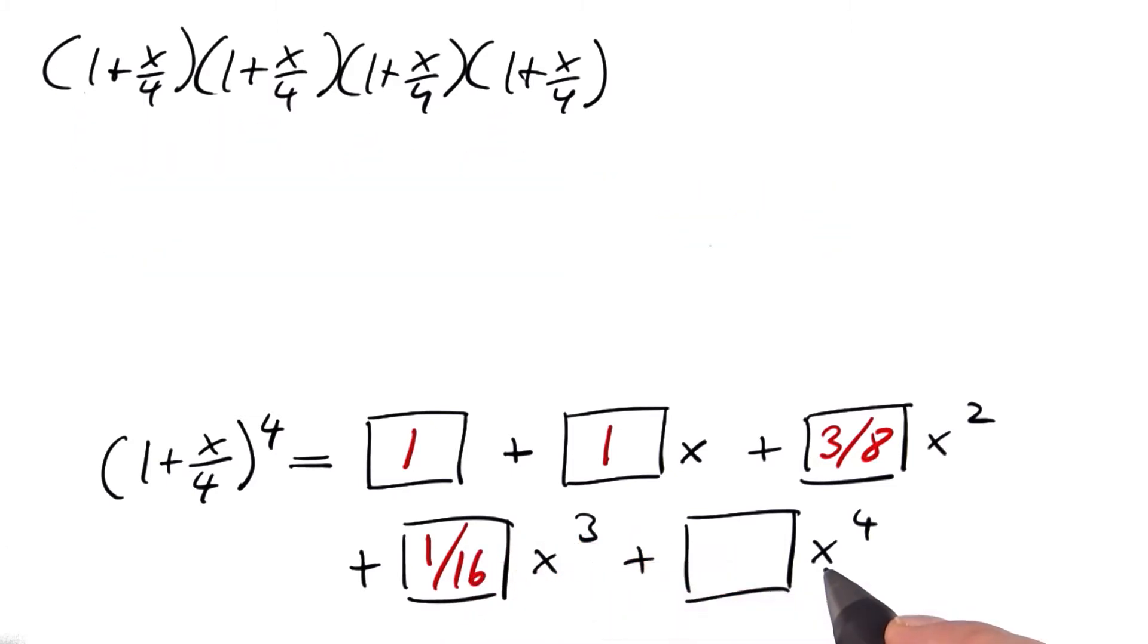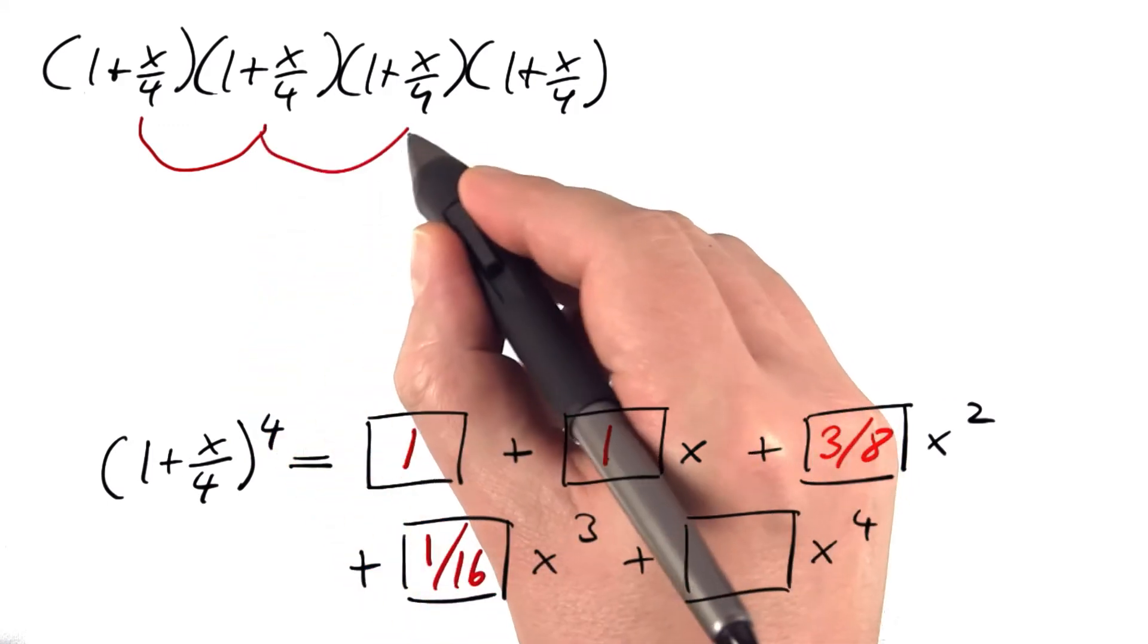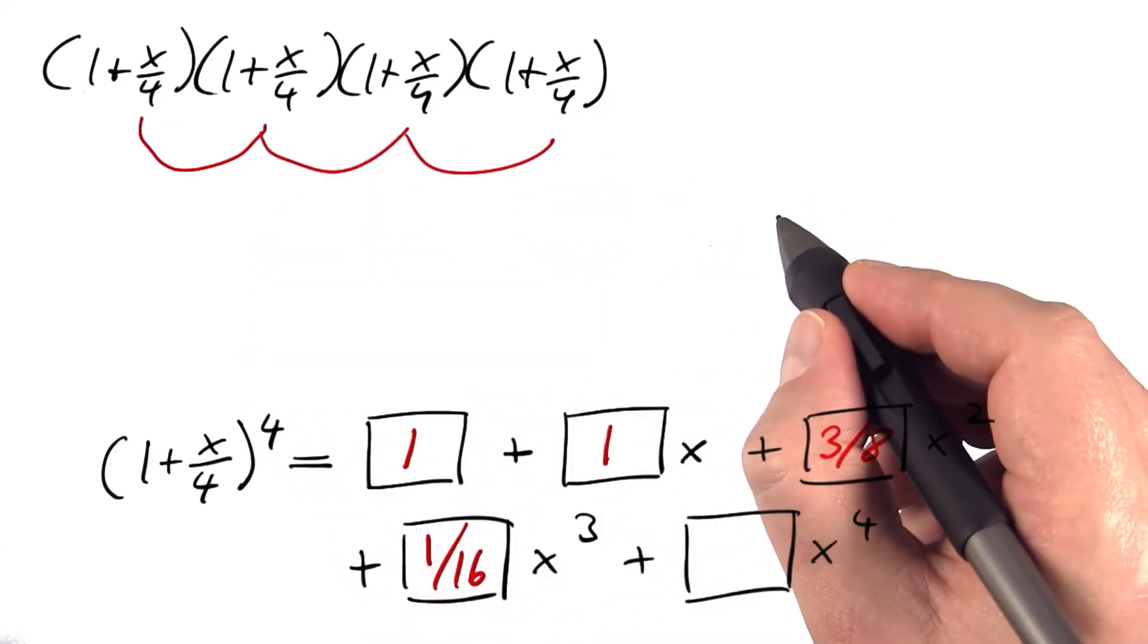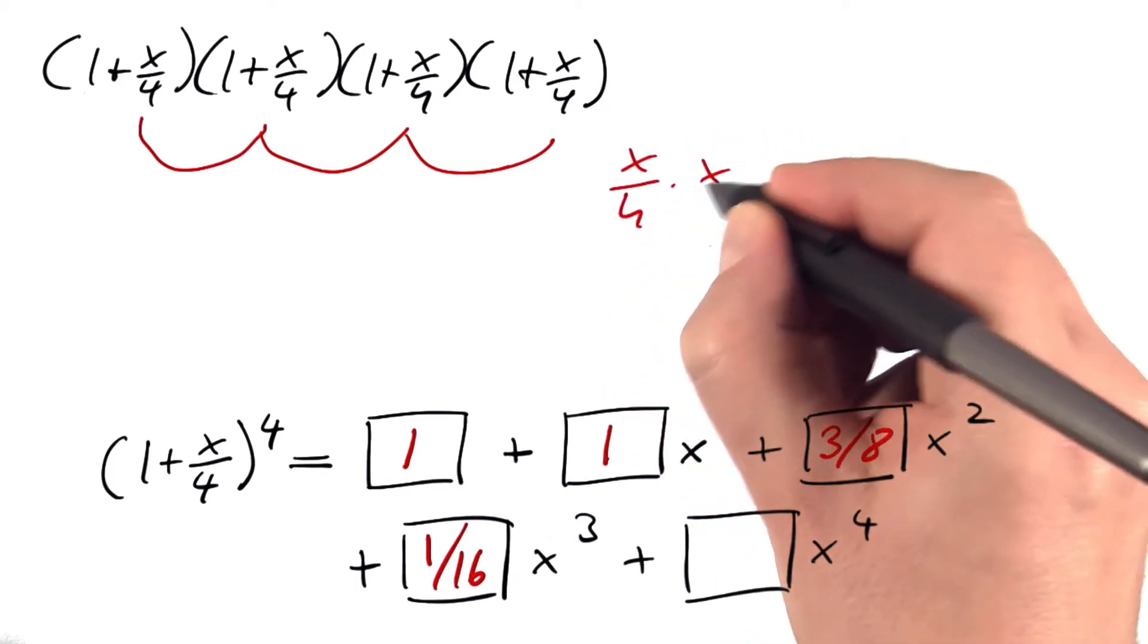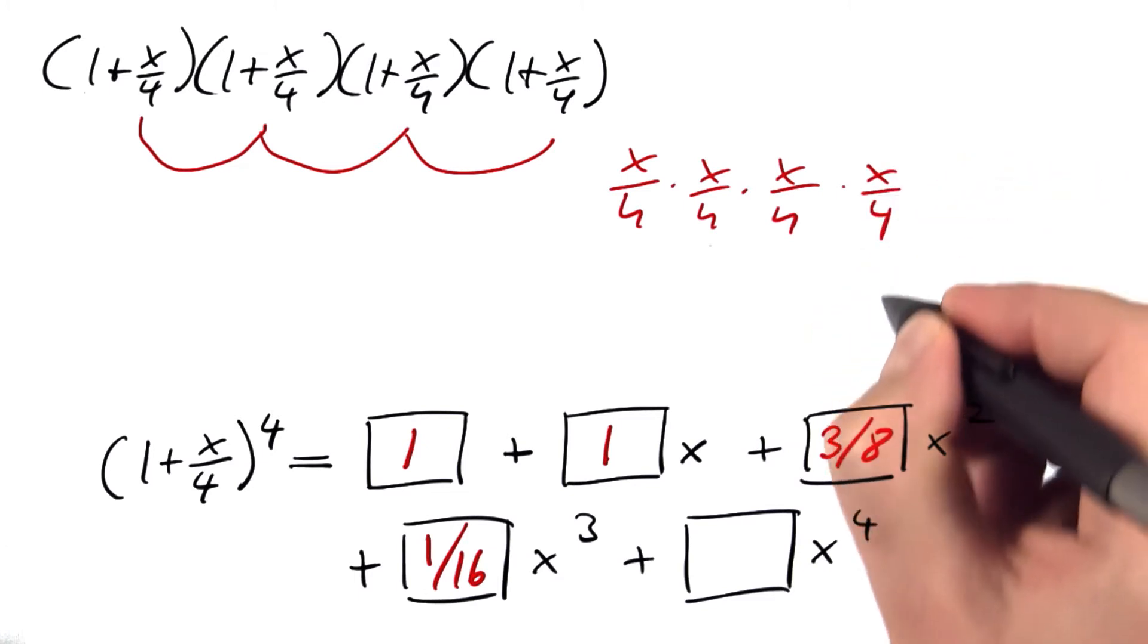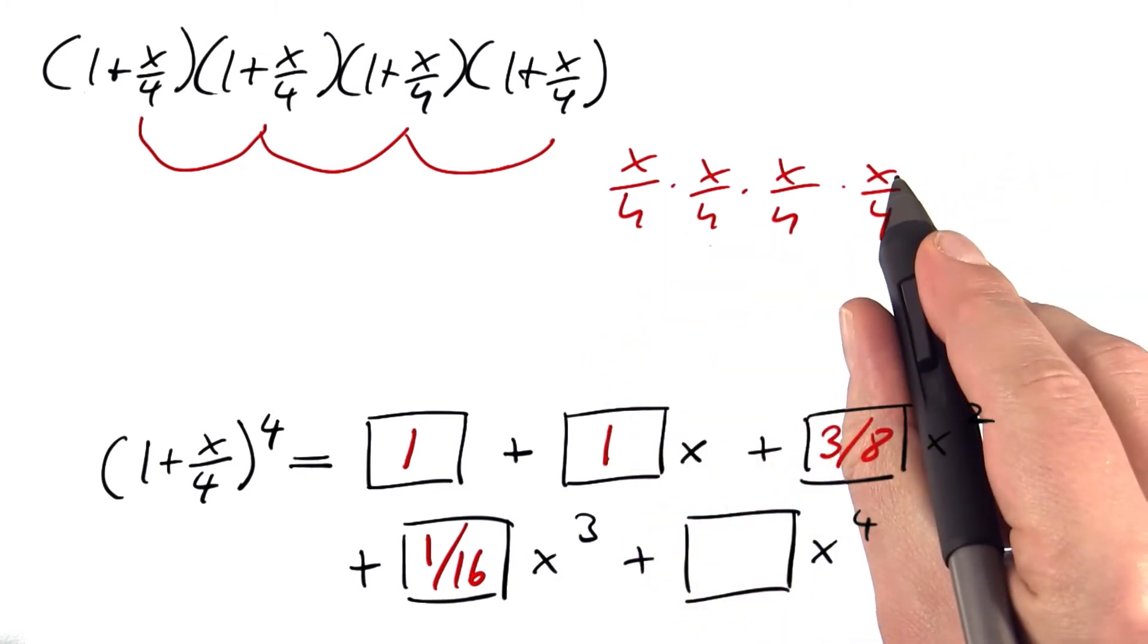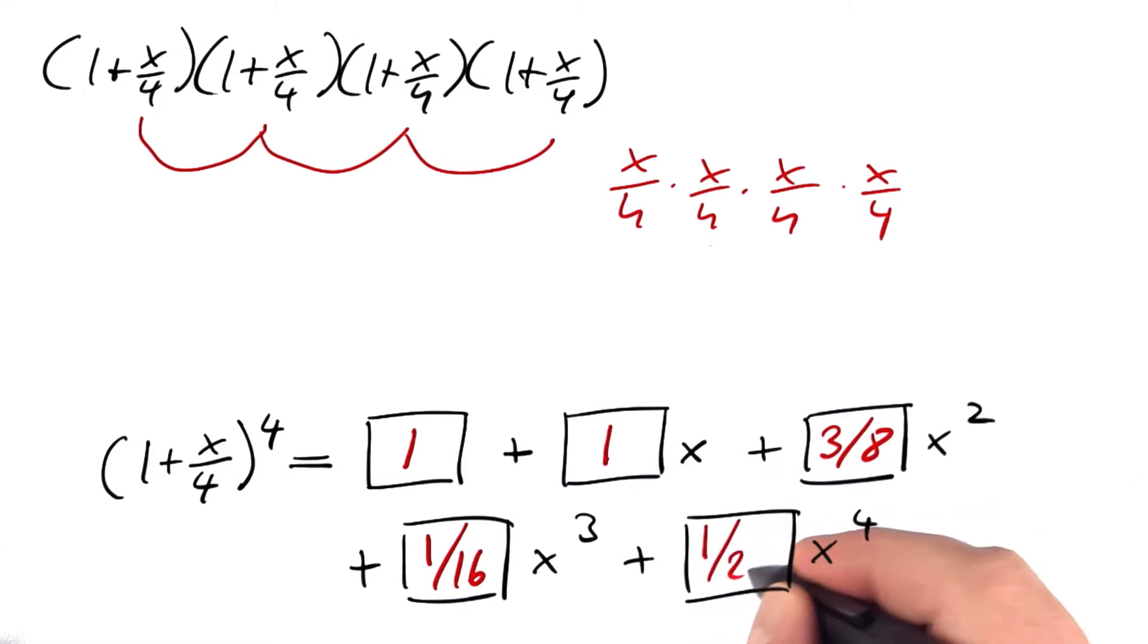And the final one, we need four factors of x. You have to pick this and this and this and this. That's it. Only one option for doing that, which leaves us with (x/4)⁴, x to the fourth power divided by 256, or 1/256.